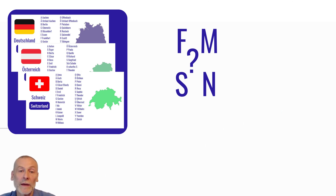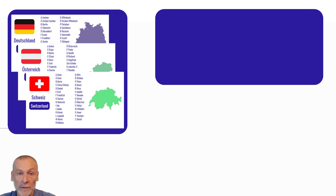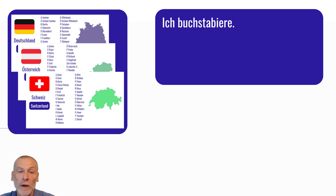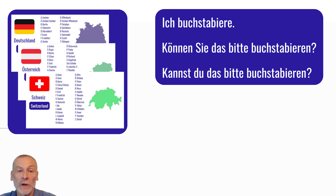So it's good if you can spell it out. You would say: Ich buchstabiere. Or when you ask the other person in a formal way, you would say: Können Sie das bitte buchstabieren? Or in an informal way: Kannst du das bitte buchstabieren?